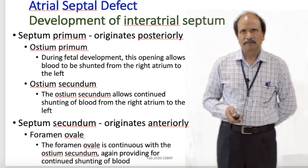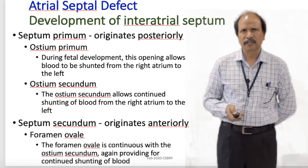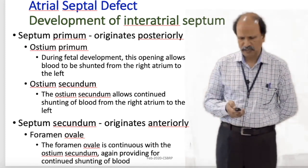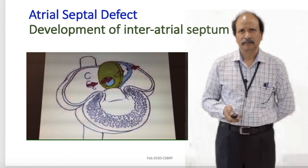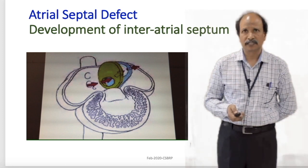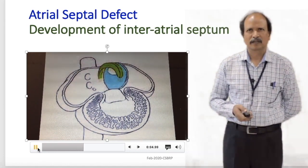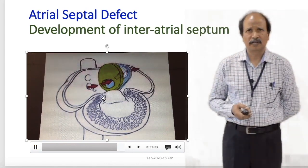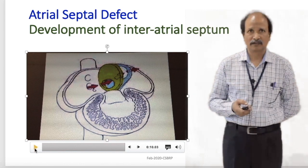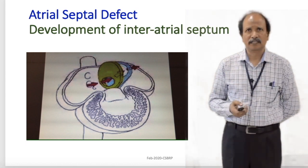Septum primum originates posteriorly and goes anteriorly; septum secundum originates anteriorly and goes posteriorly. The foramen ovale is a natural opening in the septum secundum that closes soon after birth — persistence may be associated with inter-atrial communication. A video shows the development of the inter-atrial septa, with the bluish septum primum moving posterior to anterior and septum secundum anterior to posterior, demonstrating the presence of openings in both septa.